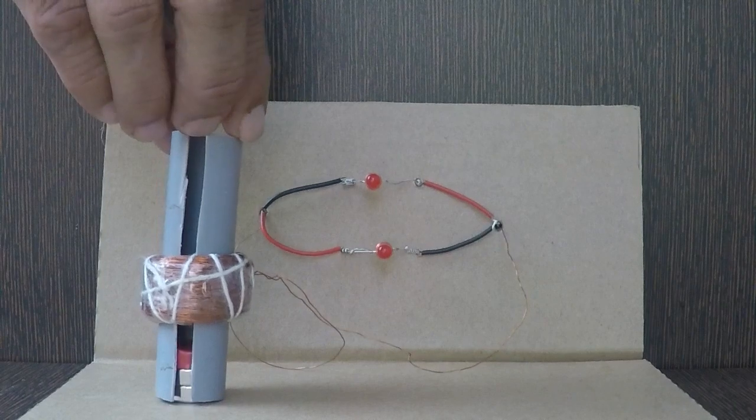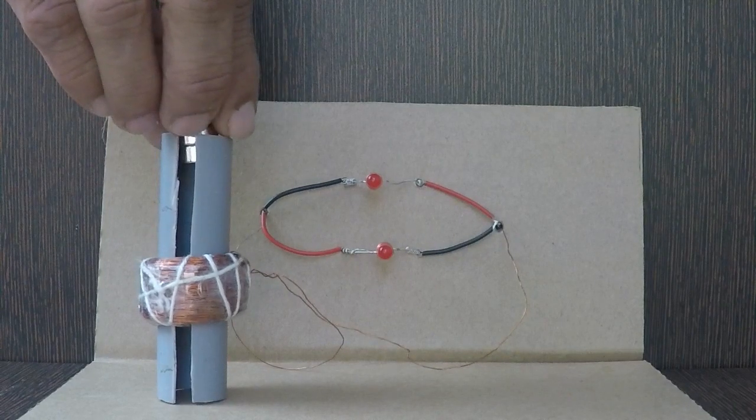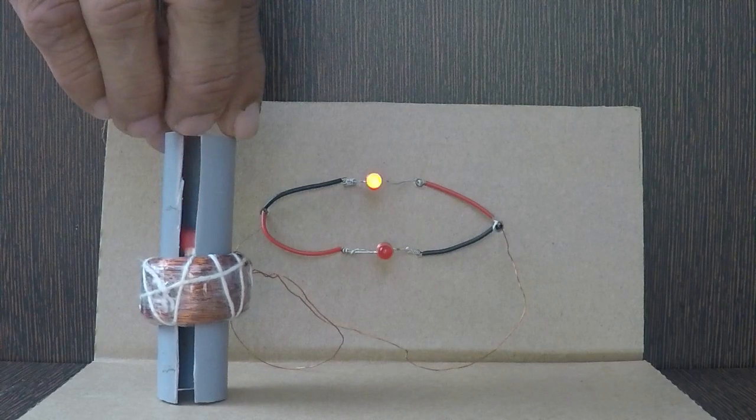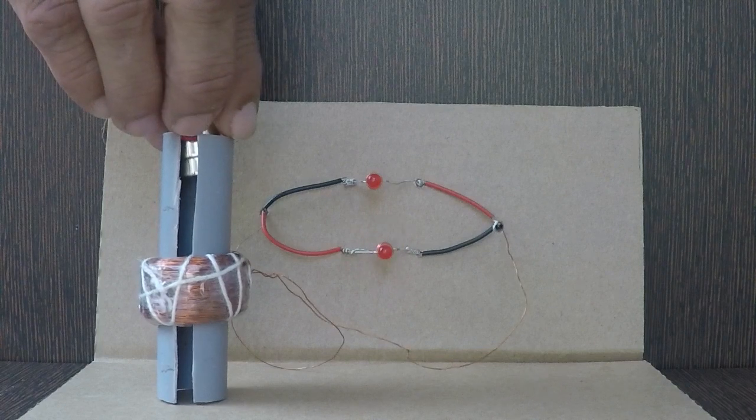If I keep the solenoid in the center and drop a magnet, both LEDs glow. This means current is induced twice in one pass.